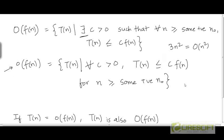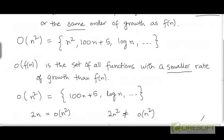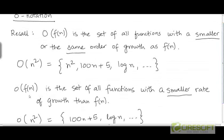But in the definition of little-o, we are not just talking about the existence of some constant. We are saying that for all constants c greater than 0, t is going to be upper bounded by c times f for n that is large enough. This can be understood as follows: if a function has a smaller rate of growth than f, then you can multiply f with any constant you like — as small a constant as you like, as long as the constant is greater than 0 — and f is sooner or later going to overtake your function.